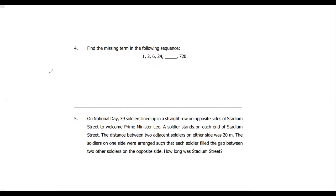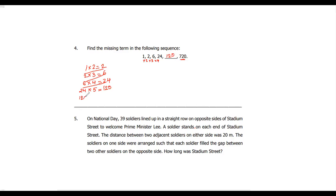When it's not a linear sequence, we look for multiplication. The pattern is: 1 into 2 is 2, then 2 into 3 is 6, then 6 into 4 is 24. So the multiplier increases by 1 each time. The next number will be 24 into 5, which is 120. To check: 120 into 6 is 720, which matches. So the missing term in the sequence is 120.